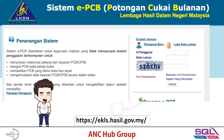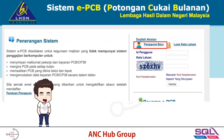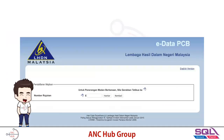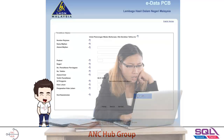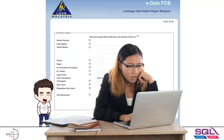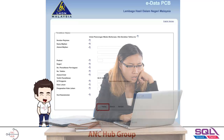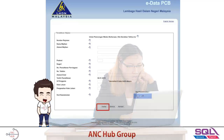Let's jump into the PCB portal. Go to ekls.hasil.gov.my. If you are a new user, click on 'Pengguna Baru' for new registration. They'll ask you to put in your e-number, and once you send your e-number, they'll ask you to fill up a form with your name and address details.